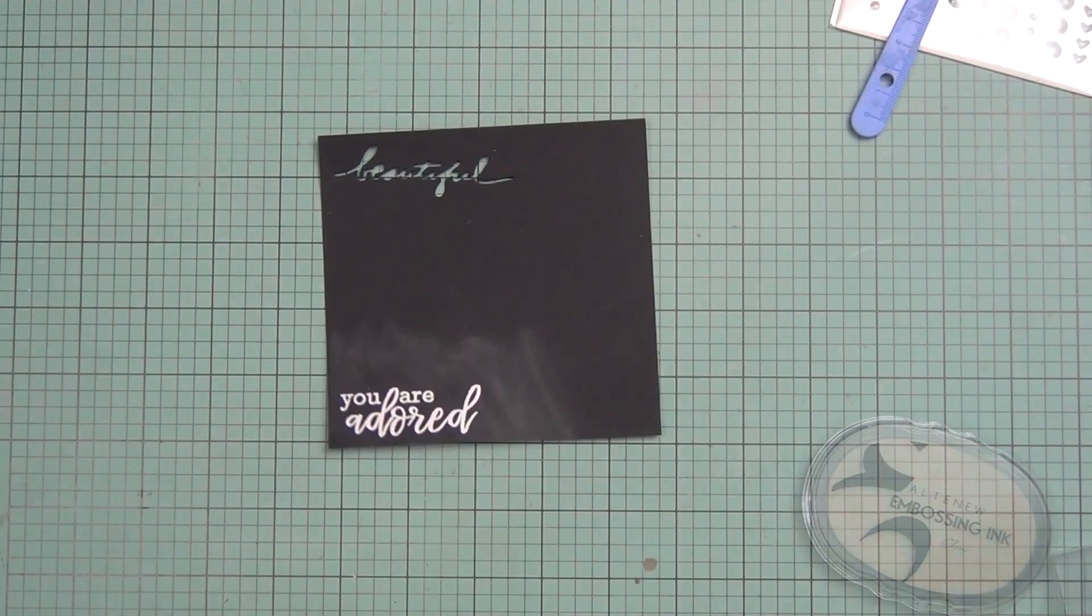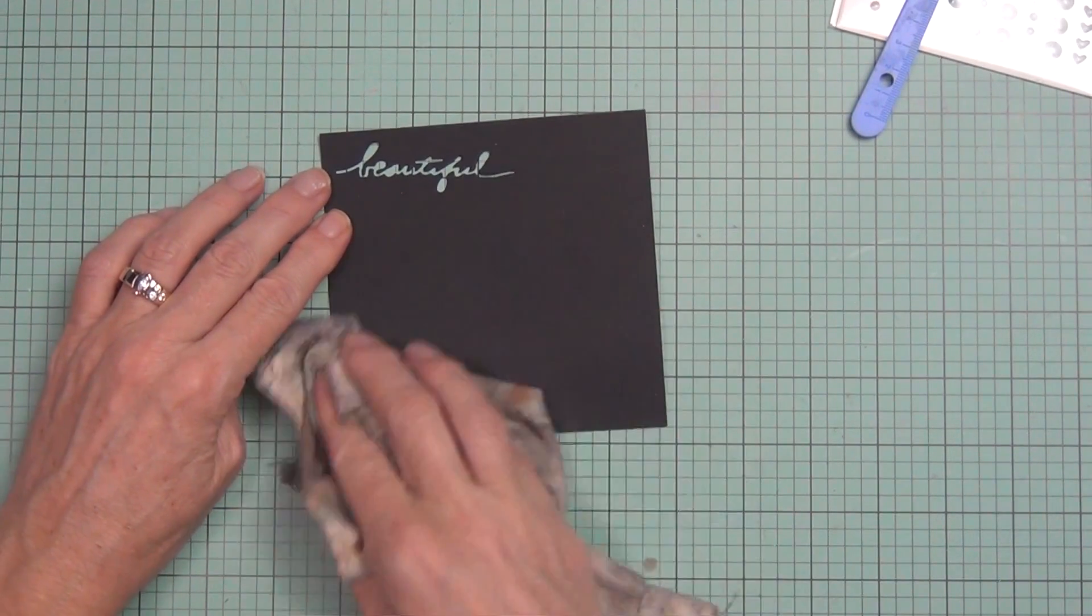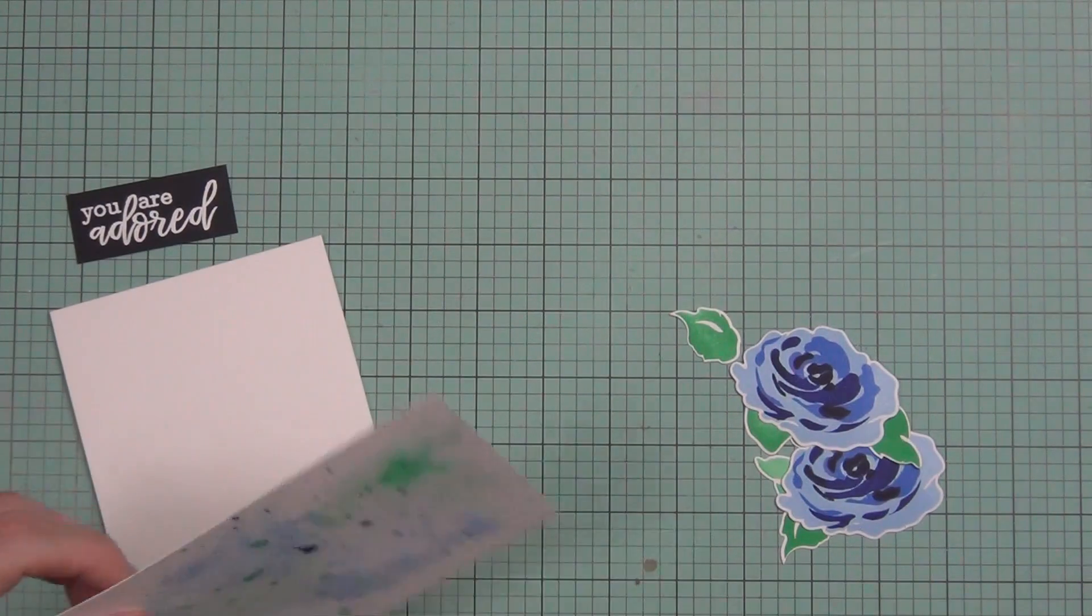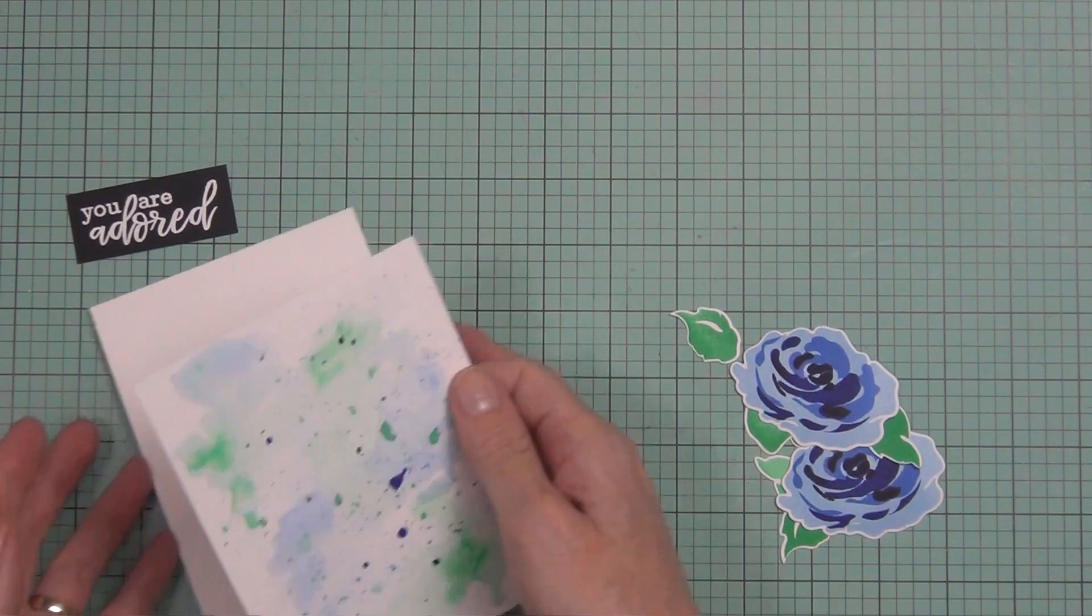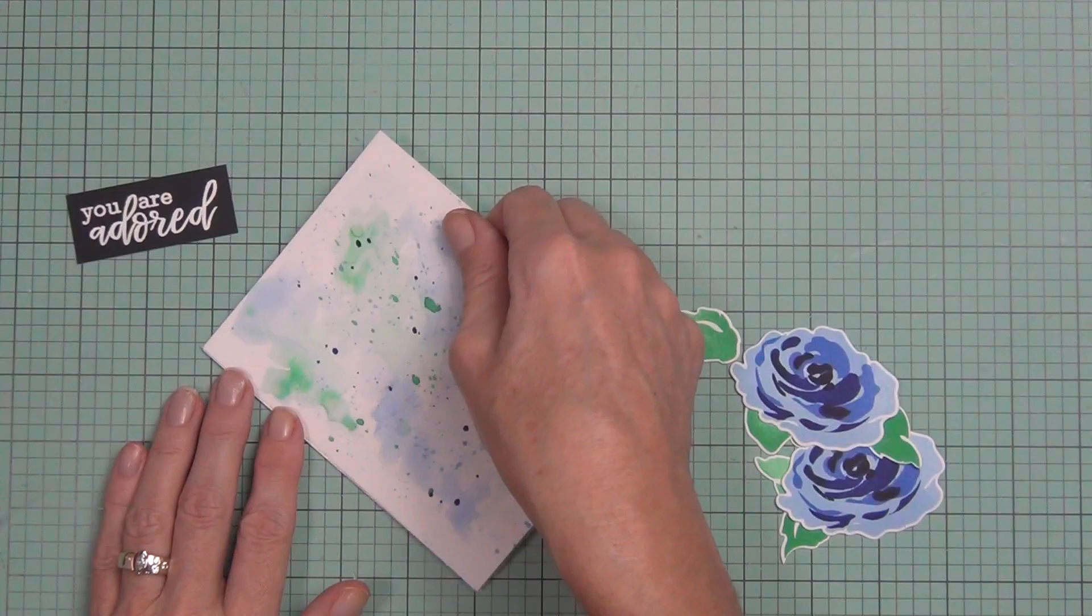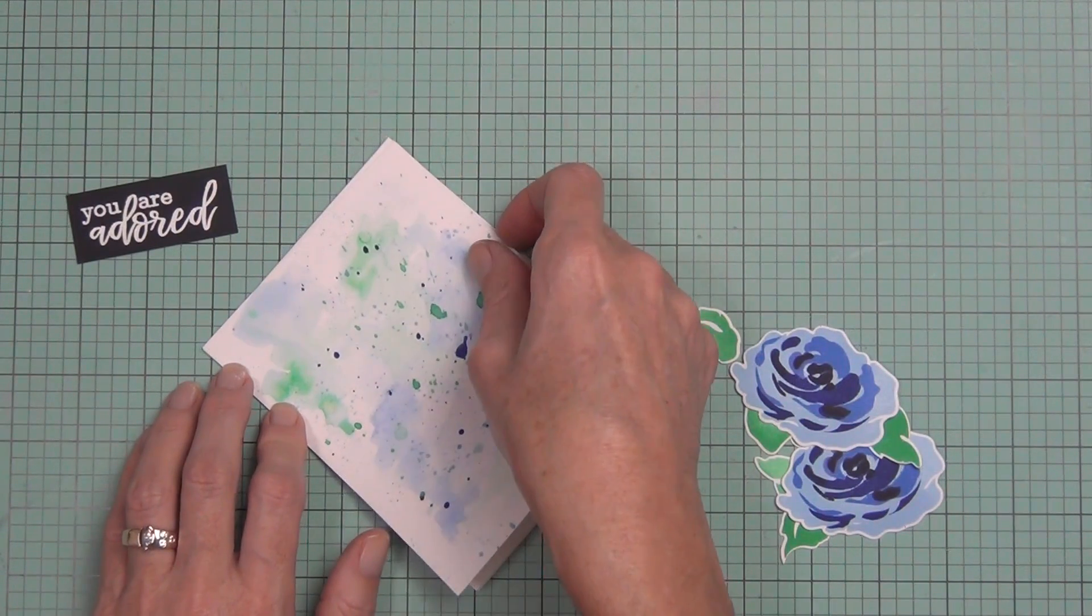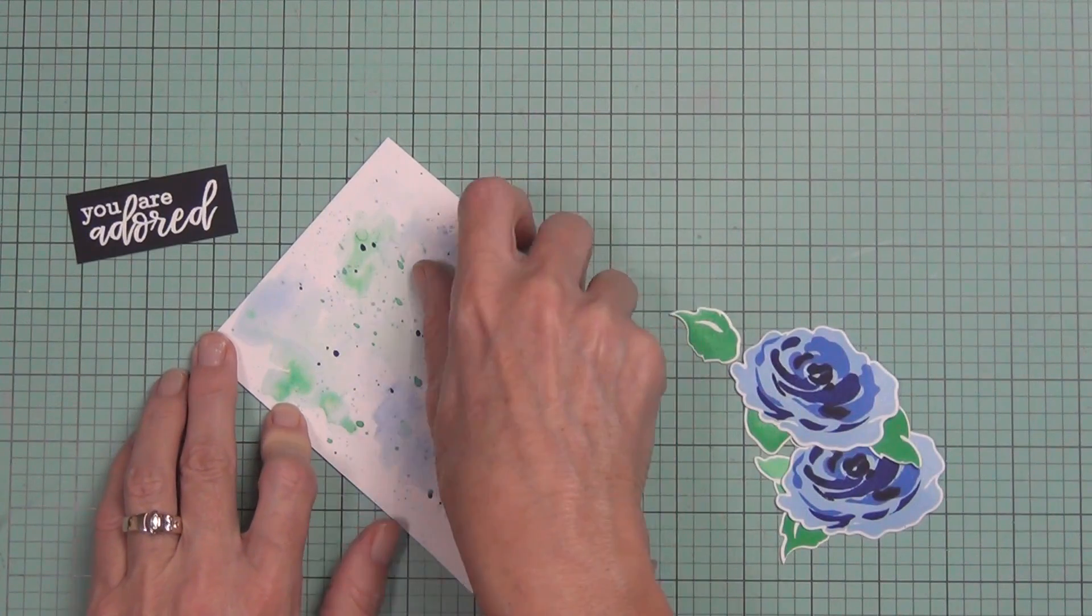Then I white heat embossed one of the sentiments. See, look at that gorgeous font that's in this stamp set, and some really nice sentiments in it too. I just did that on some black cardstock, not the navy. I used navy in the previous card.